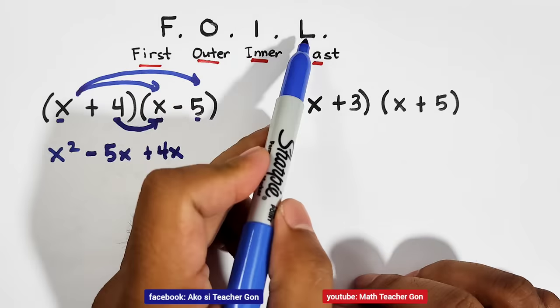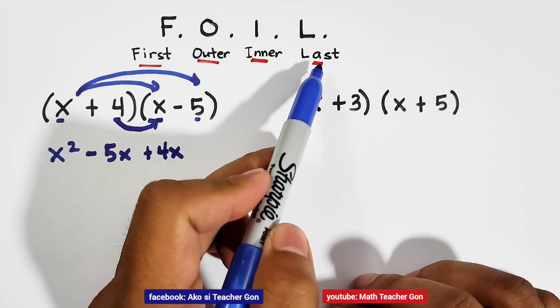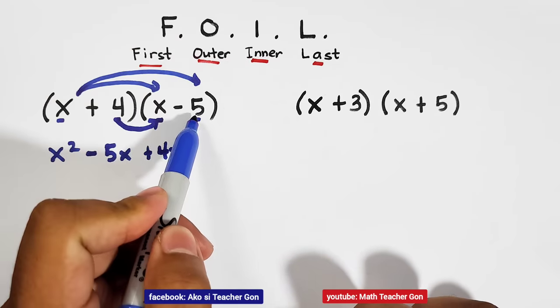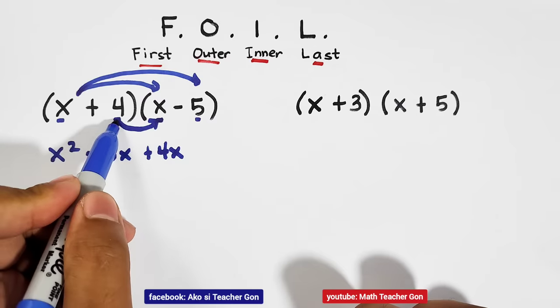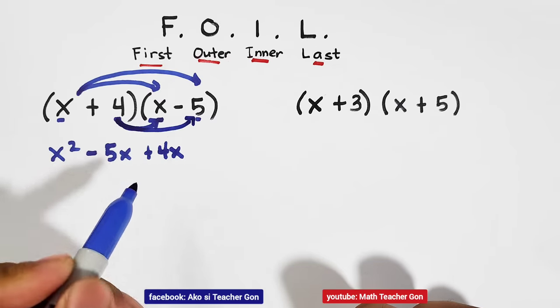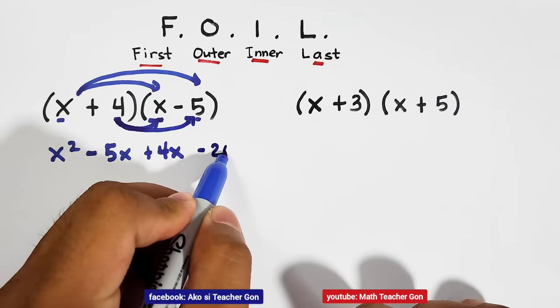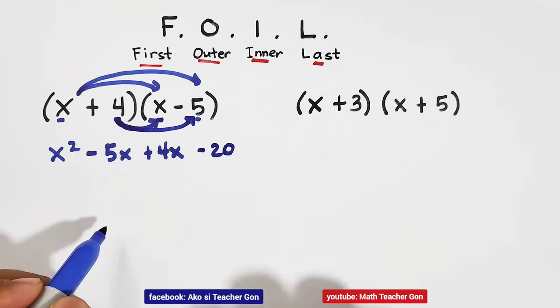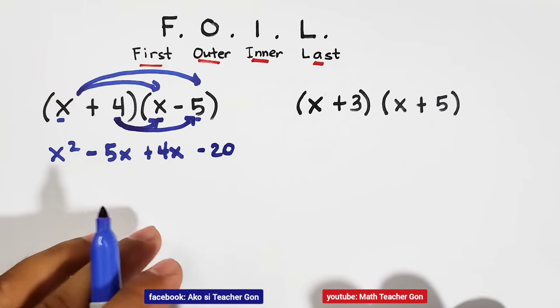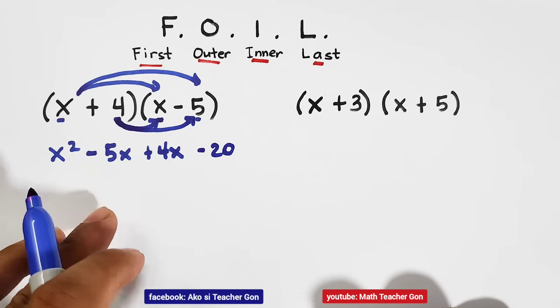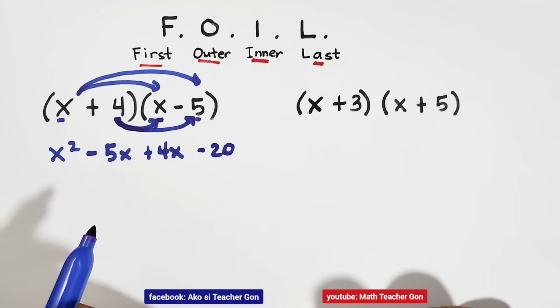Next is the L or the last terms. The last terms of the two binomials, and that is 4 and negative 5. So let us multiply 4 times negative 5. That would give the answer of negative 20. And after doing the FOIL method, guys, what you need to do is to find whether there are terms that we can combine.